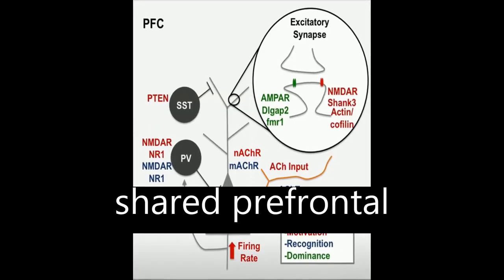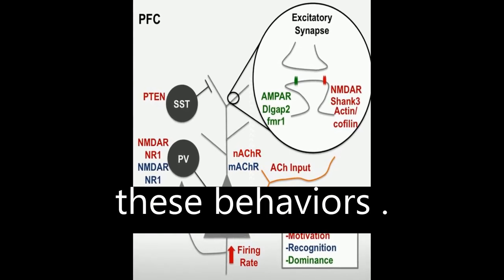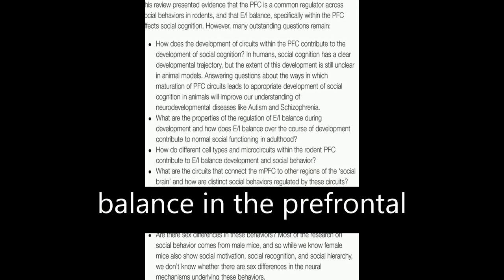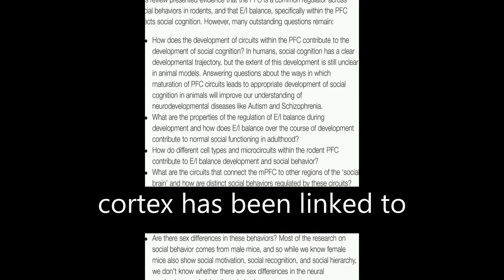They suggest that a shared prefrontal circuitry may underlie these behaviors. They also mention that altered excitation-inhibition balance in the prefrontal cortex has been linked to social cognition deficits in neurodevelopmental disorders like ASD and SCZ.